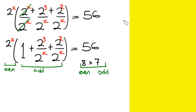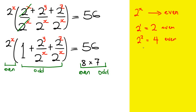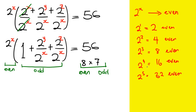Somebody might wonder: why do we accept 2 raised by the power of x to be an even number? When x represents any number: 2^1 = 2 (even), 2^2 = 4 (even), 2^3 = 8 (even), 2^4 = 16 (even), 2^5 = 32 (even) — on and on, it is established that 2 raised by the power of any number always gives an even result. So it is already established that 2 raised by the power of x is an even number.